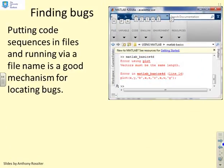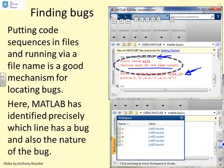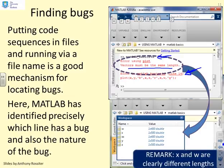On finding bugs: putting code in files and running by file name is a good mechanism for locating bugs. Here I've tried to run 'MATLAB basics 4D' and it's told me there's an error on line 14, and also told me what the error is: 'vectors must be the same length'. If I look at the vectors involved — w, x, y, and z — x and w are different lengths: w has 400 terms and x has 500 terms. So where I've tried to plot x against w, the command fails. The key point is that MATLAB has helped you find this error by giving you a very useful hint.